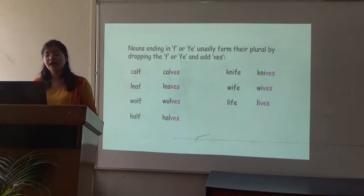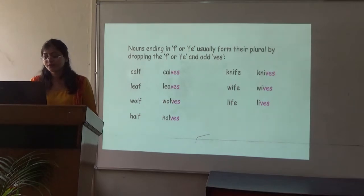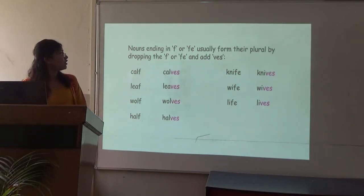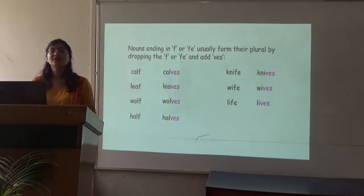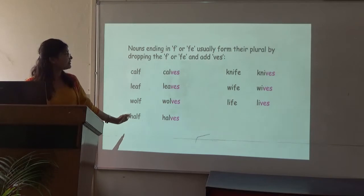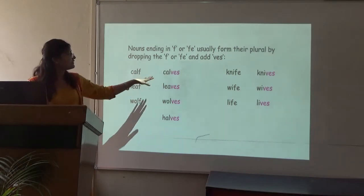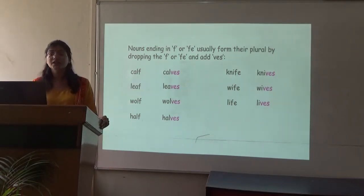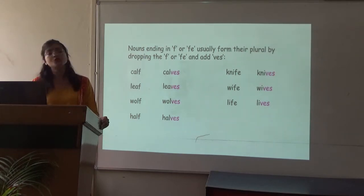Now there are some nouns that end in -f or -fe. Usually to form their plural we drop the -f or -fe and add -ves. Some words that end in -f are: calf, leaf, wolf, half. Words ending in -fe are: knife, wife, life. We cut the -f or -fe and add -ves to make their plural.